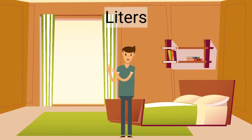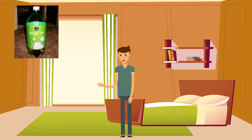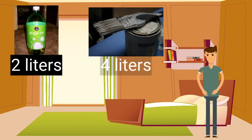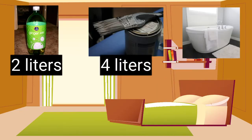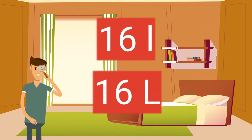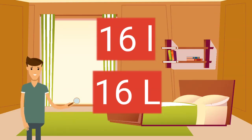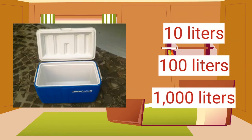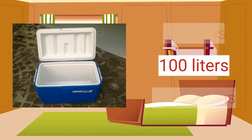Liquid volume is measured in liters. Some soda bottles are sold in one liter or two liter bottles. A paint can holds almost four liters. A bathtub can hold around 300 liters of water. Liters are shown with an abbreviation of a lowercase or an uppercase L. This measurement can be read as 16 liters. Think about an average size cooler. Which of these estimates best shows how much a cooler can hold? This cooler would probably hold 100 liters. It holds a lot more than a paint can, but less than a bathtub.